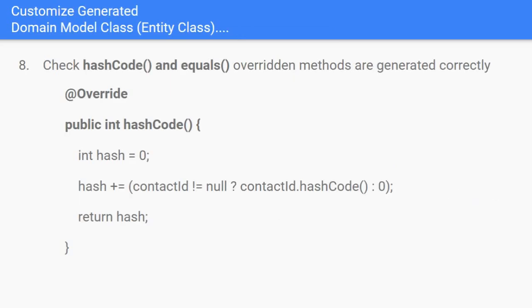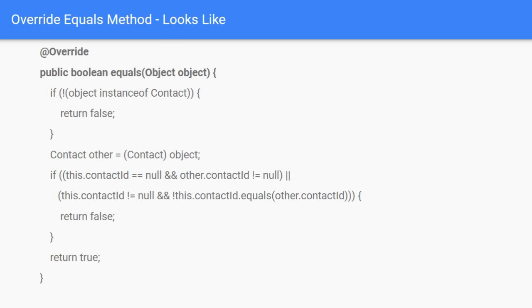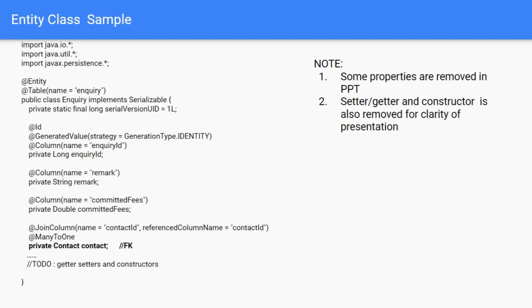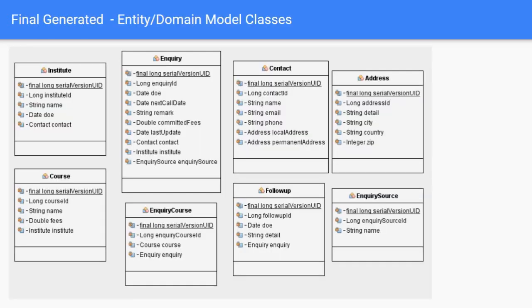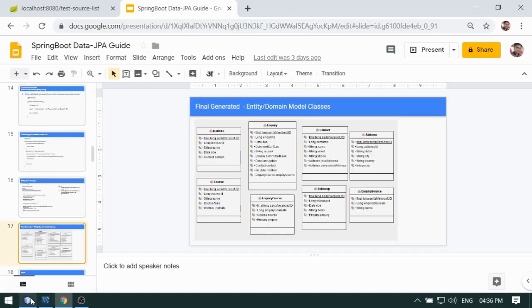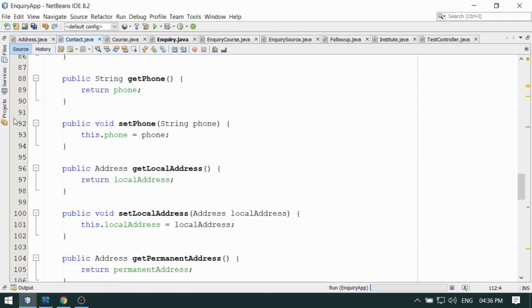The next thing is you must ensure the hashCode and equals methods are present. They are automatically generated because Hibernate uses them internally to uniquely identify entity objects. If you are coming from a Hibernate background, you may understand the need. It is automatically generated here and I am not doing any change — just ensure it is always there.